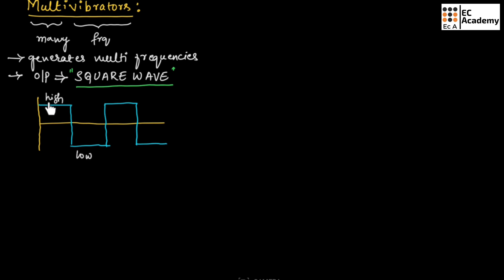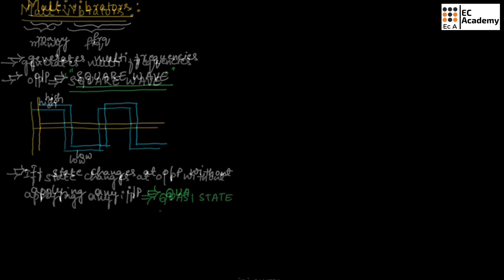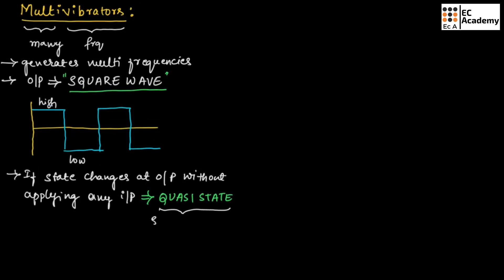Now, if the state of a square wave changes from high state to low state or from low state to high state without applying any input, such a state is known as a quasi state. It is also known as a semi-stable state. So if the output changes from one state to another without any input, we call it a quasi state or semi-stable state.